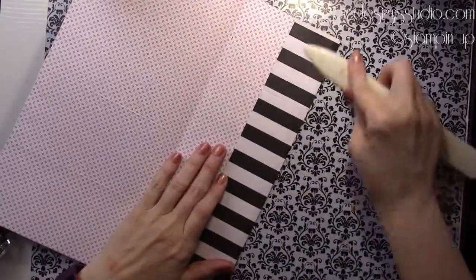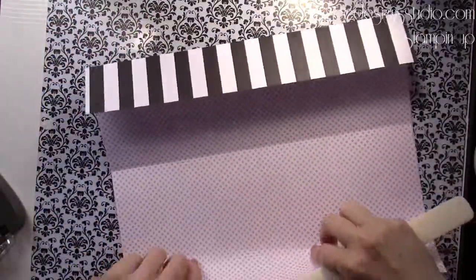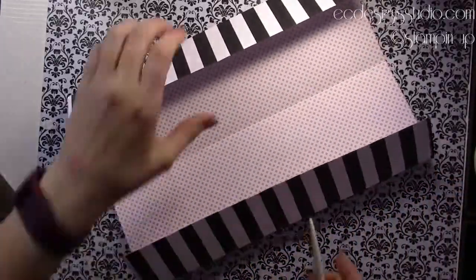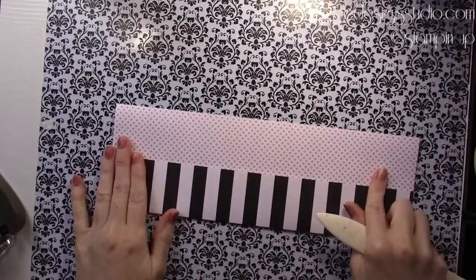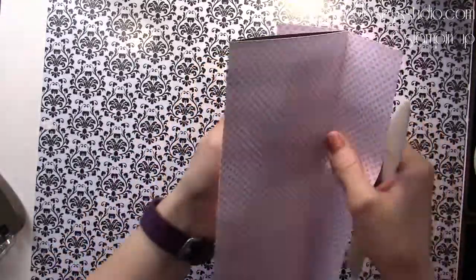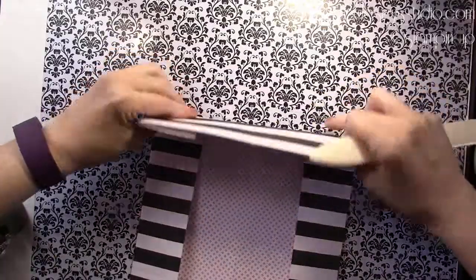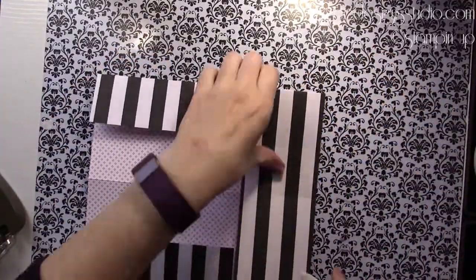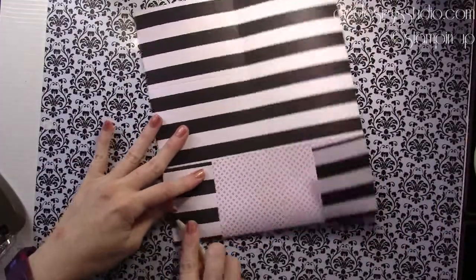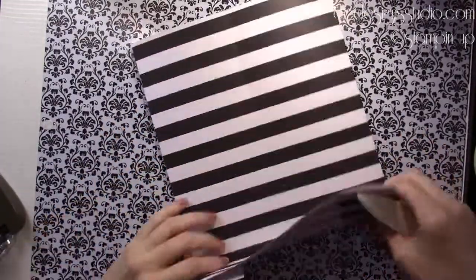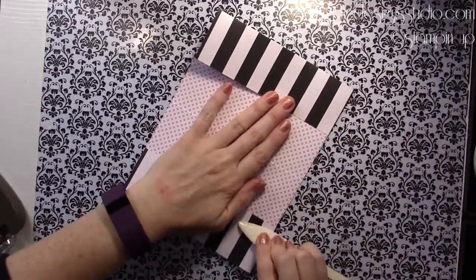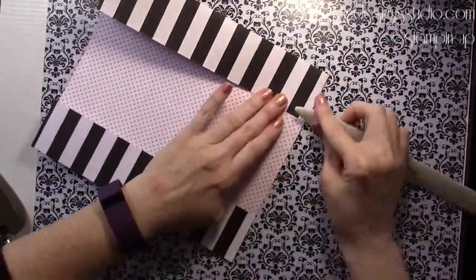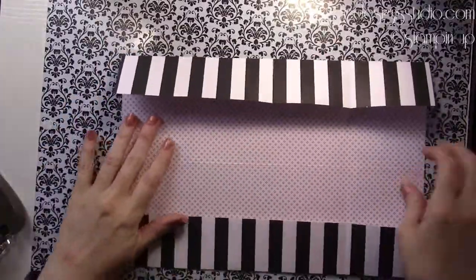So there is our scoring. Let's set aside our trimmer for now. We're going to need it again so don't put it too far away. Right now I'm just wanting to go ahead and burnish our score marks. So go ahead and fold over and get your bone folder and score everything.